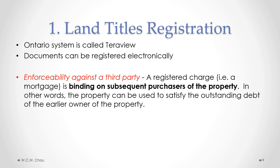With respect to the issue of enforceability against a third party, a registered charge — in other words, a mortgage registered on Terraview — is binding on subsequent purchasers of the property. That means the mortgage against the property is valid and binding regardless of who owns the property. Even though the current owner is not the person who originally borrowed money, the mortgage is still applicable to the property, and the creditor can take action to sell the property to satisfy the outstanding debt. Typically, when you buy real estate, any outstanding mortgages registered against the property are paid off and discharged before you take ownership.